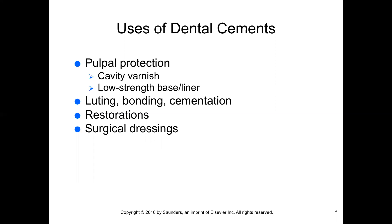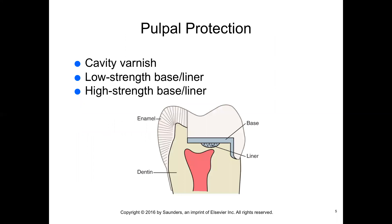It's important to understand the different methods dental cements can be used and the manipulation requirements for each application. The bacterial effects of caries, the biological response to chemicals contained in restorative materials, and even the cutting of tooth structure can cause pulpal irritation. This can also occur as a result of thermal conductivity of metal restorations placed over or near the pulp, and when the dentin remaining over the pulp is too thin to withstand compressive, tensile, and shearing stresses.